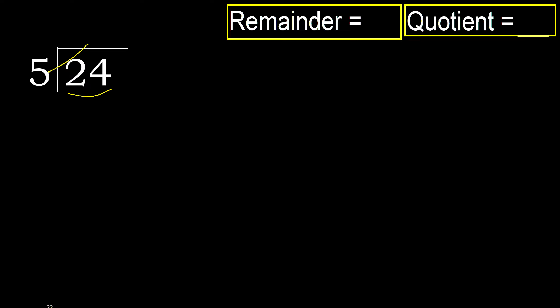But not greater. 5 multiplied by 5 is 25 — 25 is greater. 5 multiplied by 4 is 20 — 20 is not greater.